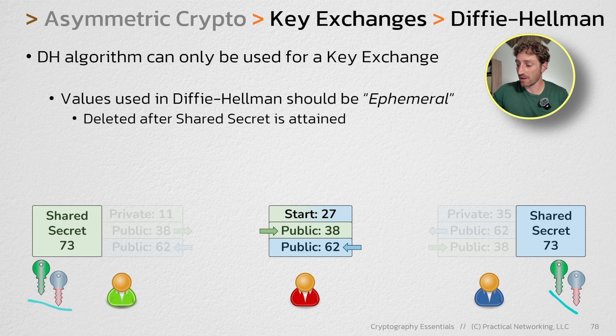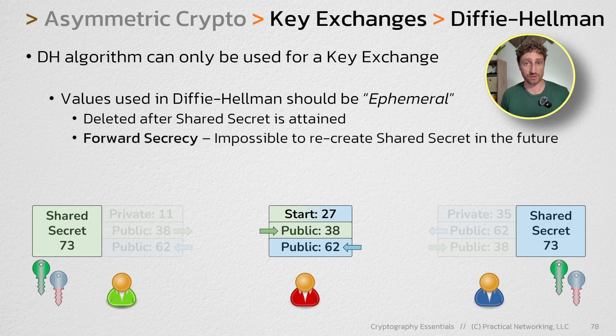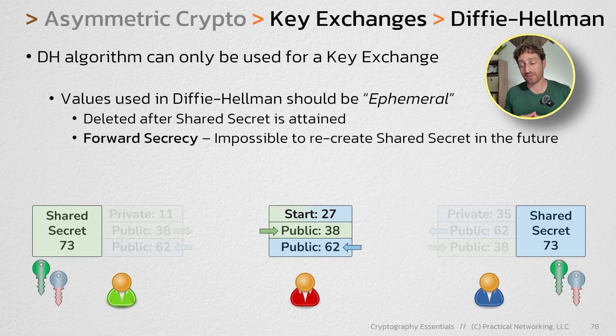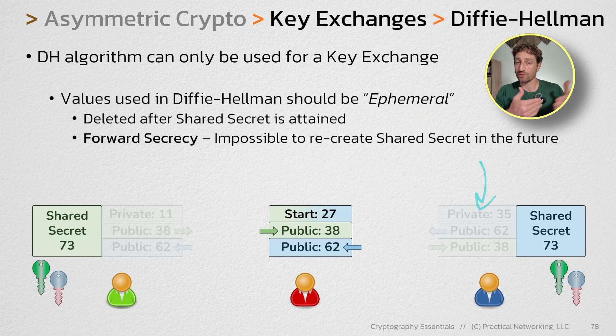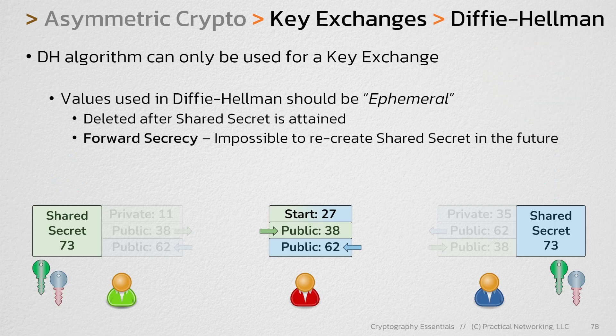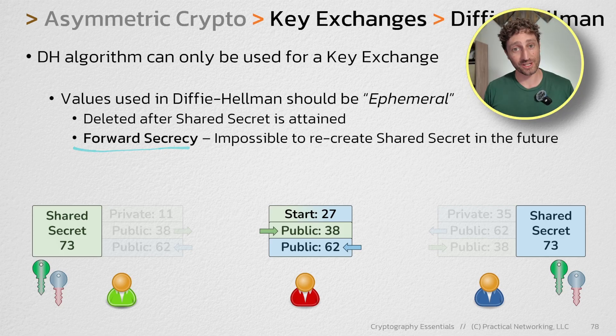So as long as you're using a key space big enough that it would take thousands and thousands of years to brute force, what you encrypt with keys derived from this shared secret effectively stays encrypted forever. This provides a very important cryptographic principle known as forward secrecy. Forward secrecy asserts that it is impossible to recreate whatever values you're using to create secret keys. RSA as a key exchange does not provide forward secrecy because the private key file still exists, and if it's ever compromised, you can use it to extract the seed value and recalculate the shared secret.